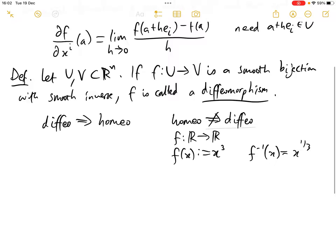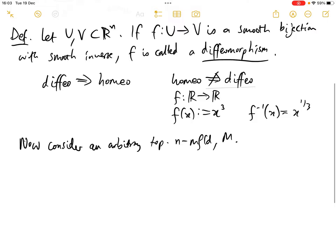Now let's consider an arbitrary topological n-manifold, let's call it M. And then we know that each point of M is in the domain of a coordinate map. So if we consider coordinate map phi from U to U-hat, which is a subset of R^n.